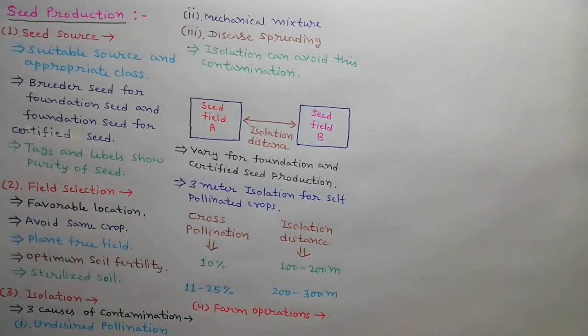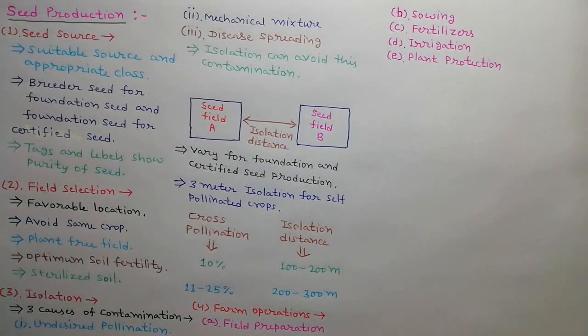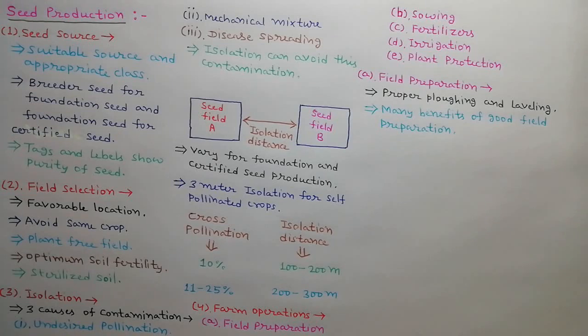Fourth step is farm operations. There are many farm operations such as field preparation, sowing, fertilizers, irrigation and plant protection. In field preparation, seed field is ploughed and leveled properly. Good field preparation leads to good seed germination which is helpful in good disease control and good water management.